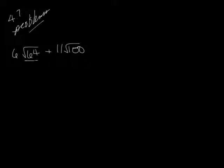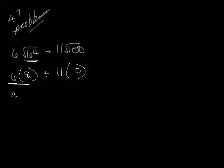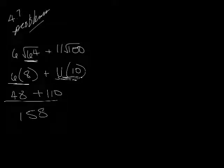We do what's in the radical sign. 6 times square root of 64 is 8. 11 times square root of 100 is 10. Now we multiply these, plus multiply these, add those together, and we're done.